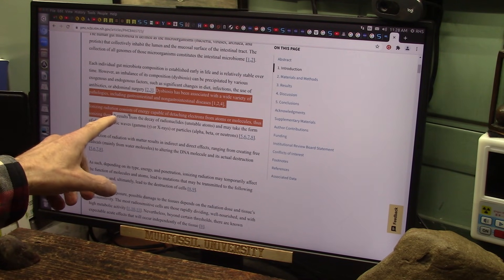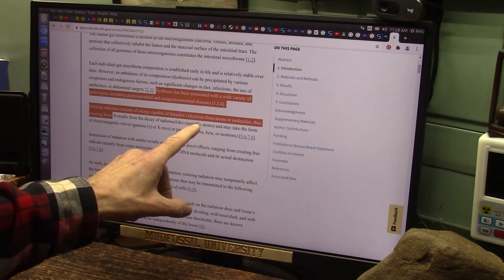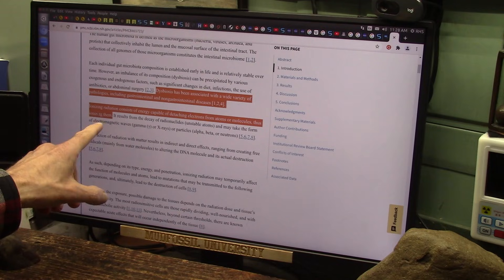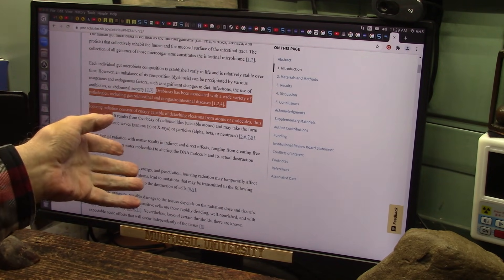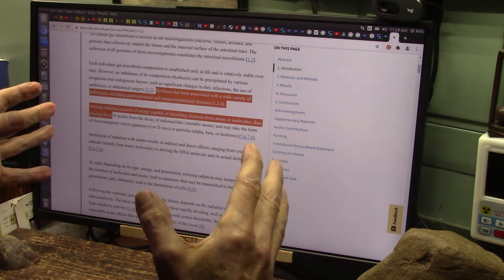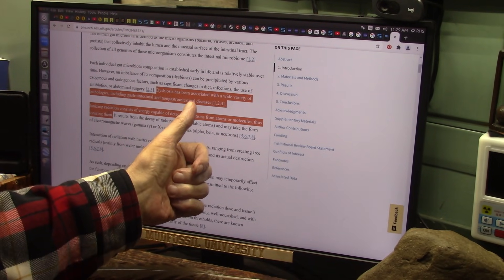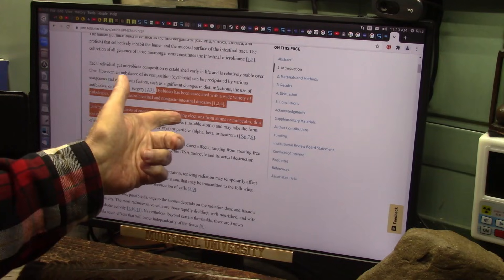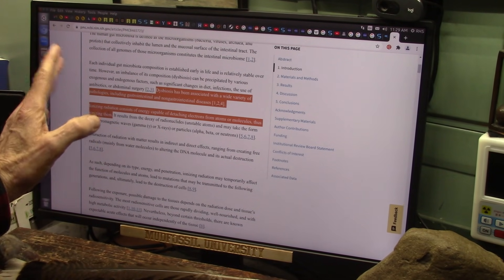Ionizing radiation consists of energy capable of detaching electrons from atoms or molecules, thus ionizing them. When you detach an electron, you change the molecular formula, basically. And these things are very sophisticated. So, did we kill the bacteria so it can't create the molecule? Or did we break the molecule? I think we could do both. Ionizing radiation appears to do both.